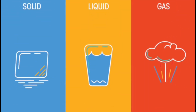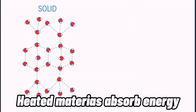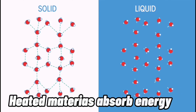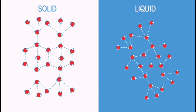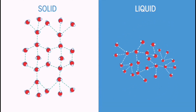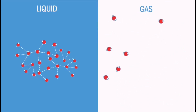Matter can transition between the three states when heated or cooled. When a material is heated, it absorbs heat energy. This additional energy can cause attractive forces between molecules to break, leading to rearrangement of the particles because the attractive forces no longer hold them together as tightly. The same happens when a liquid is heated — the attractive forces between the molecules break, leading them to become more widely dispersed and a gas forms.